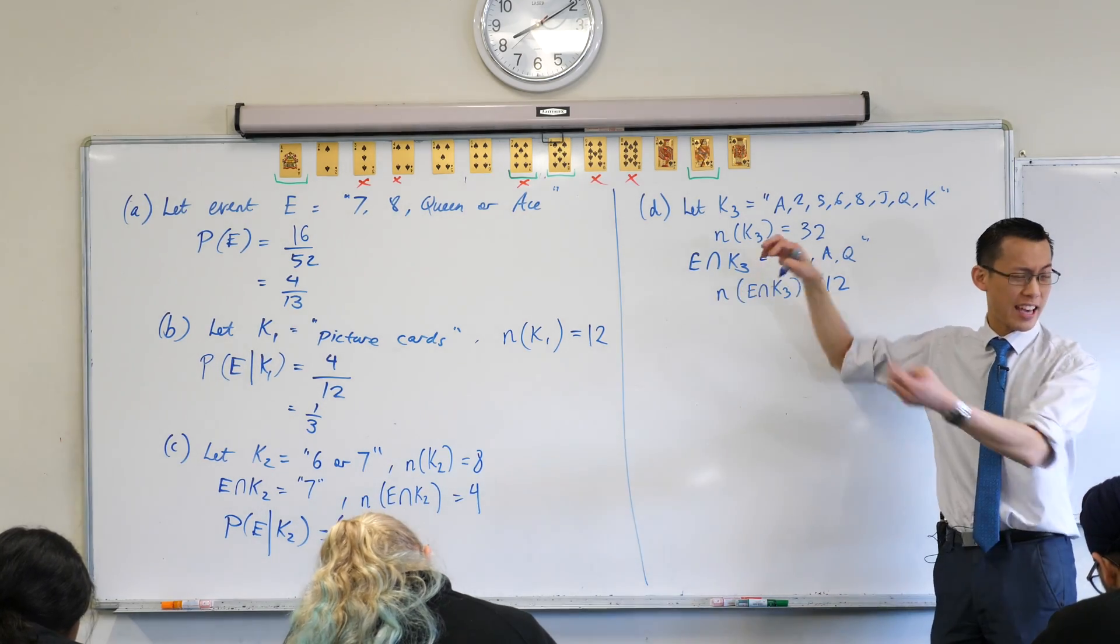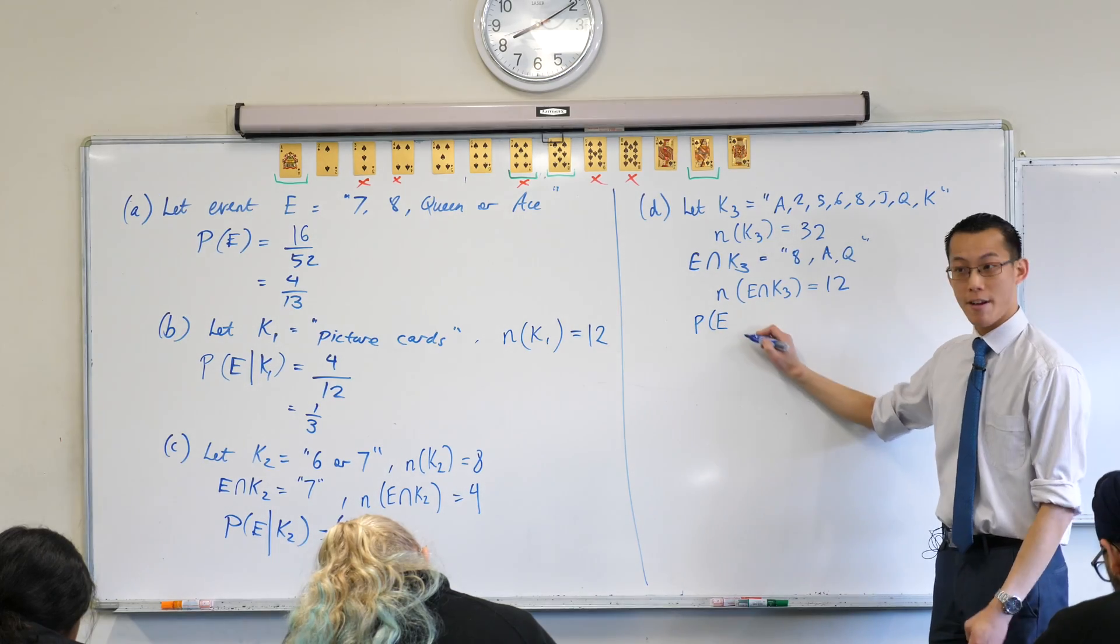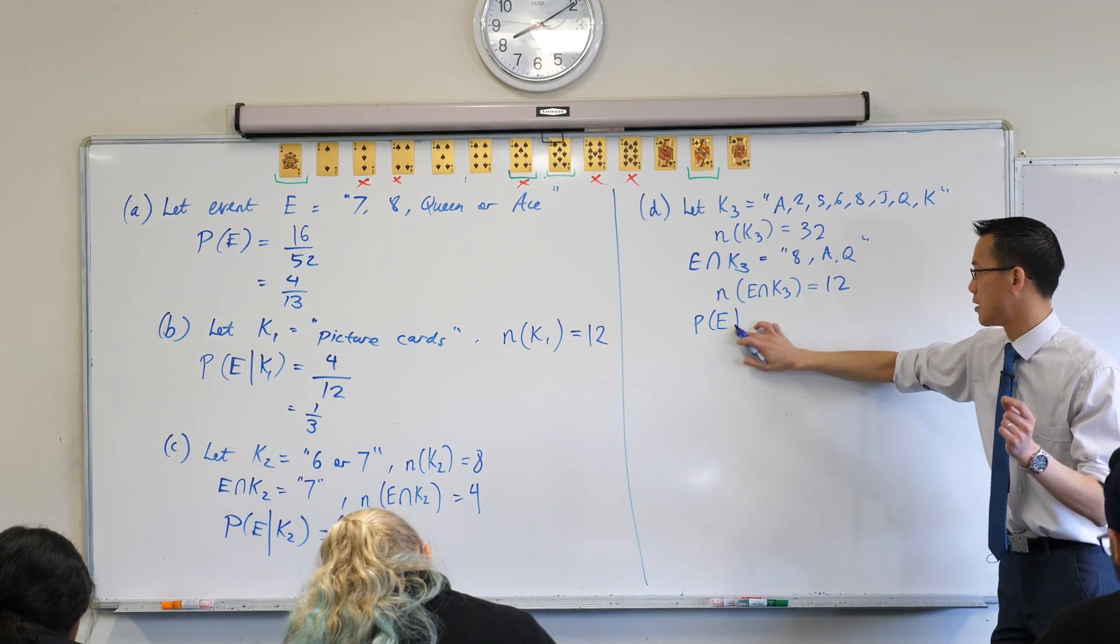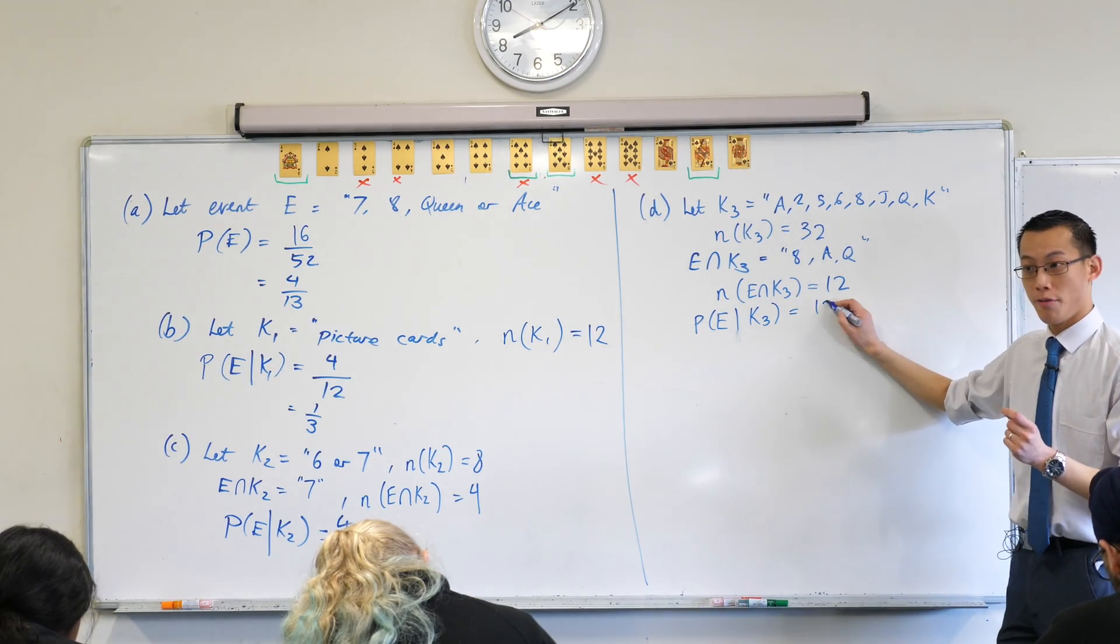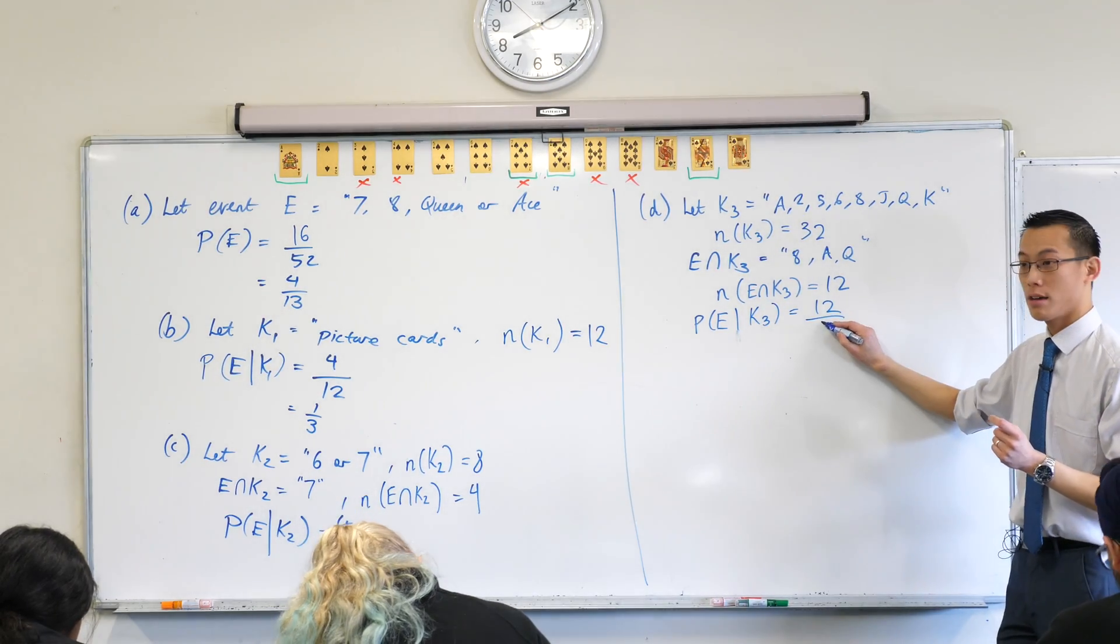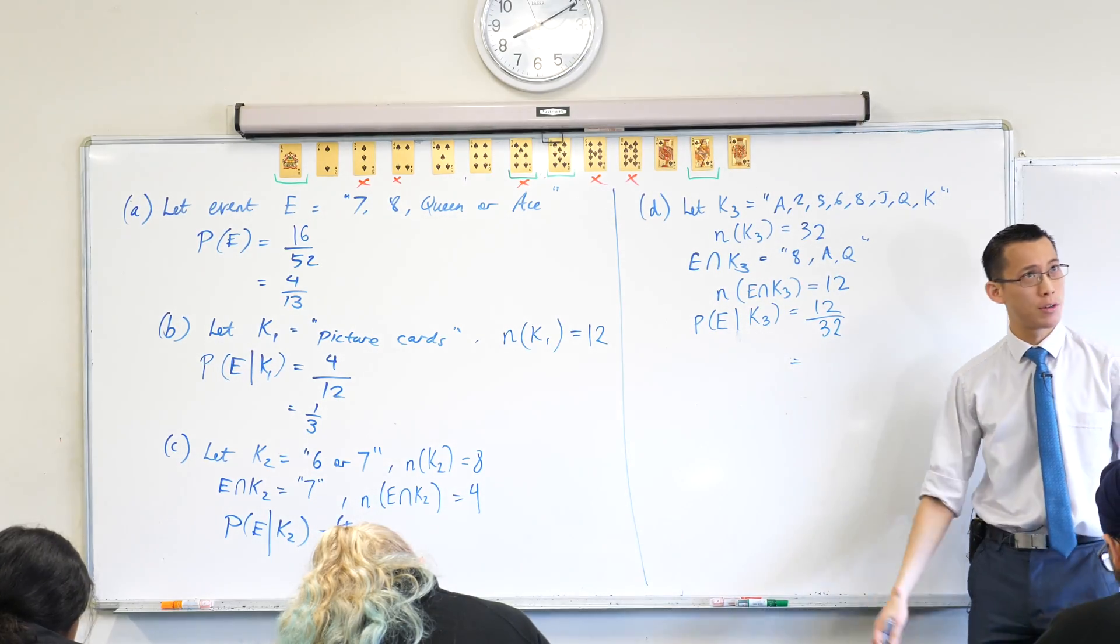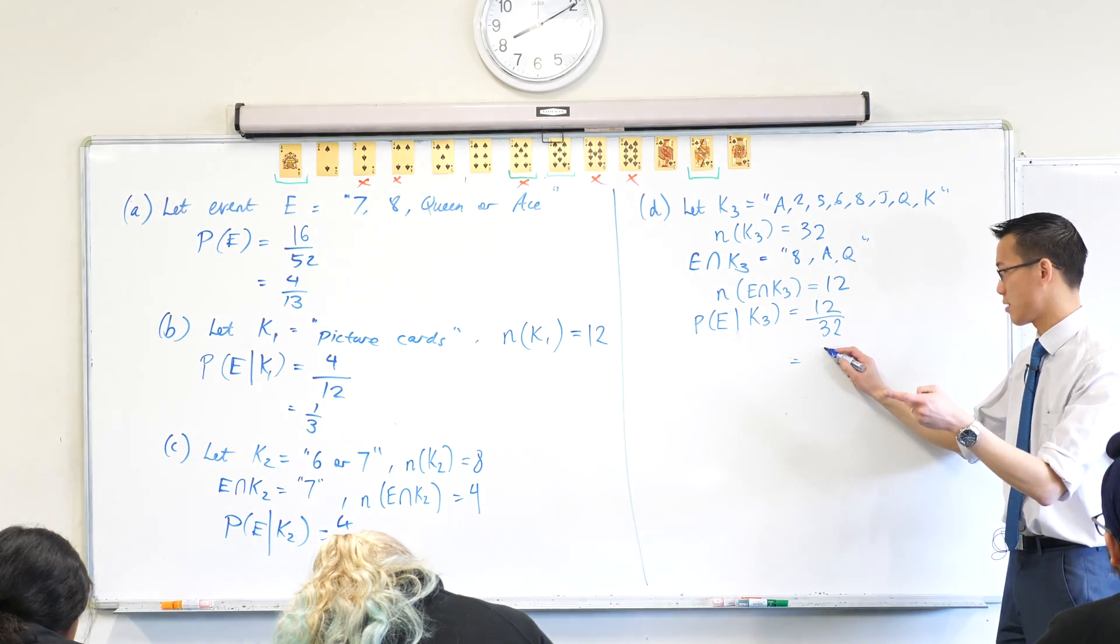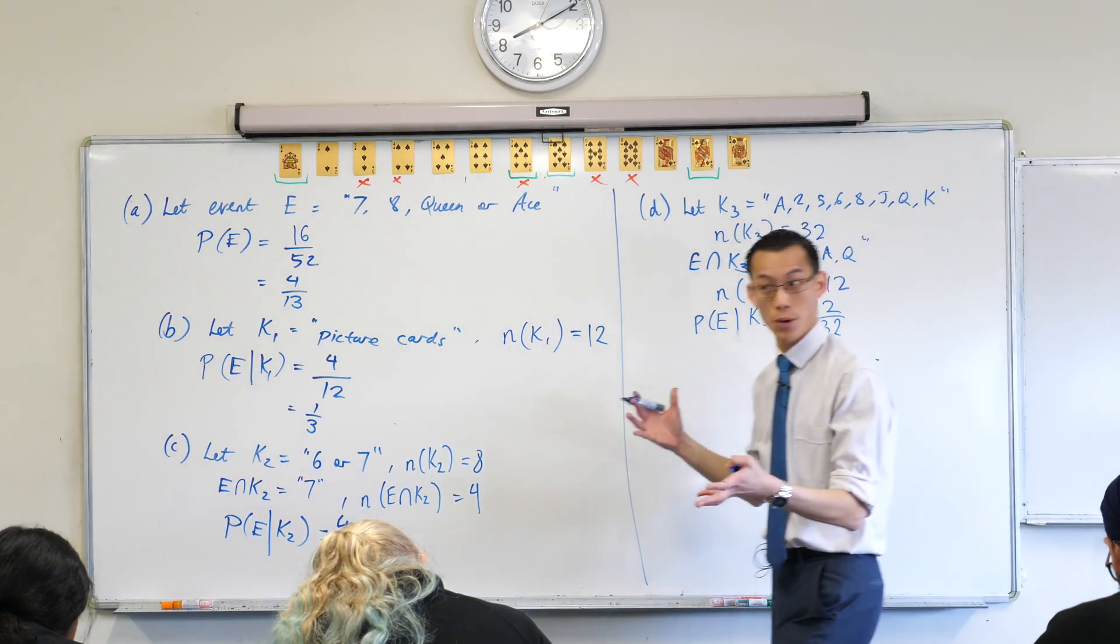So now I can say, I can actually take and combine all this. The probability of my original favorable event, if you know, that's what that bar means, if you know, that this is your condition, is new favorable events divided by new sample space, 12 and 32. What is that? Common factor of four? You can go, that's three on eight, I believe. There we go.